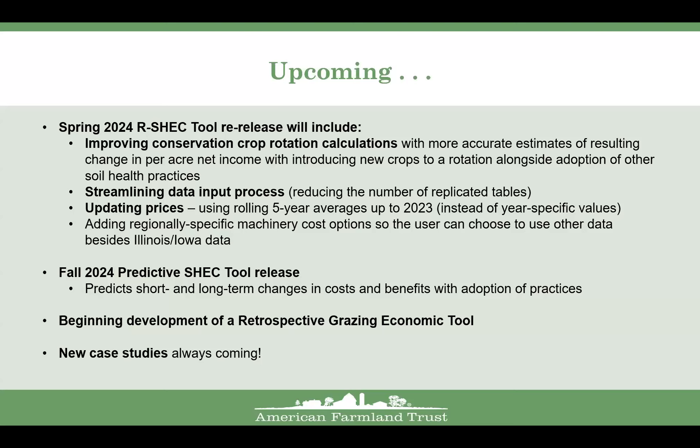What are the strengths and limitations of this tool? Starting with limitations: it is data-intensive, requiring significant interview time with the farmer to obtain production and management data for the conventional before-versus-after soil health adoption scenarios. We rely heavily on the farmer's data in some cases. It's limited to a farm-level analysis for specific crops, and works best for row crop and almond-dominated production states. Currently the RSHEC tool doesn't work well for analyzing a conservation crop rotation alongside other practices — we are aware it could be improved.